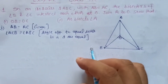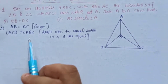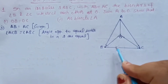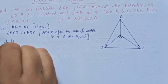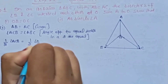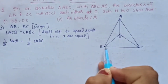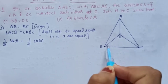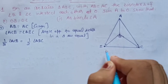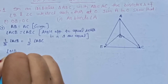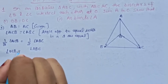Equal side ki opposite jo angle hoti hai woh equal hoti hai. Okay, iska reason de diya. Do cheezein equal hongi. Ab angle ACB aur angle ABC yeh dono equal angles hain. Ab agar hum inka half karein to dono ka half likh sakte hain: half of angle ACB equal to half of angle ABC. Yeh angle OCB equal to angle OBC ho jaata hai — kyunki bisectors do equal parts mein divide karte hain.